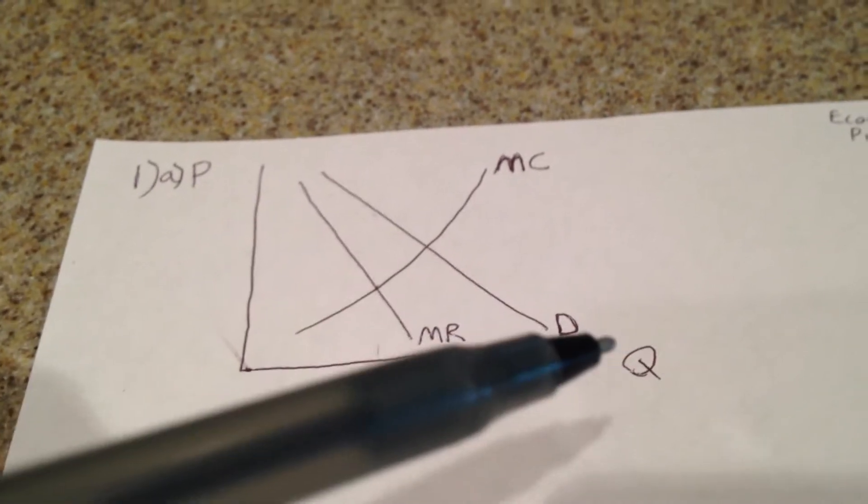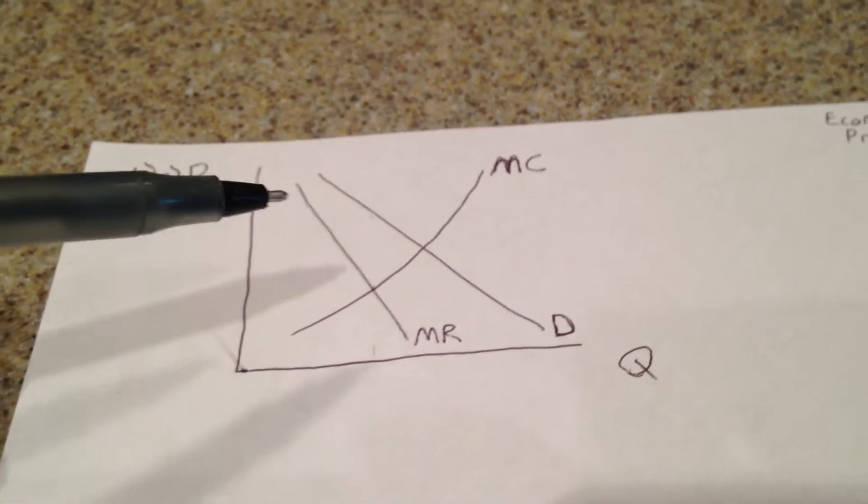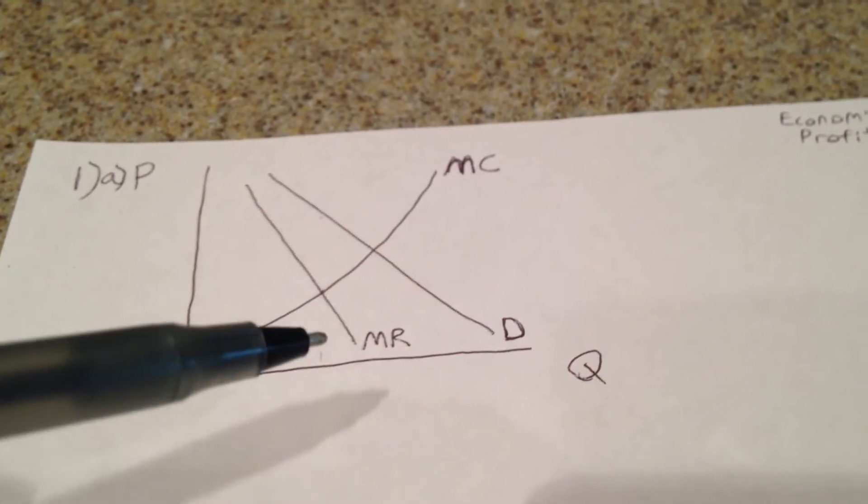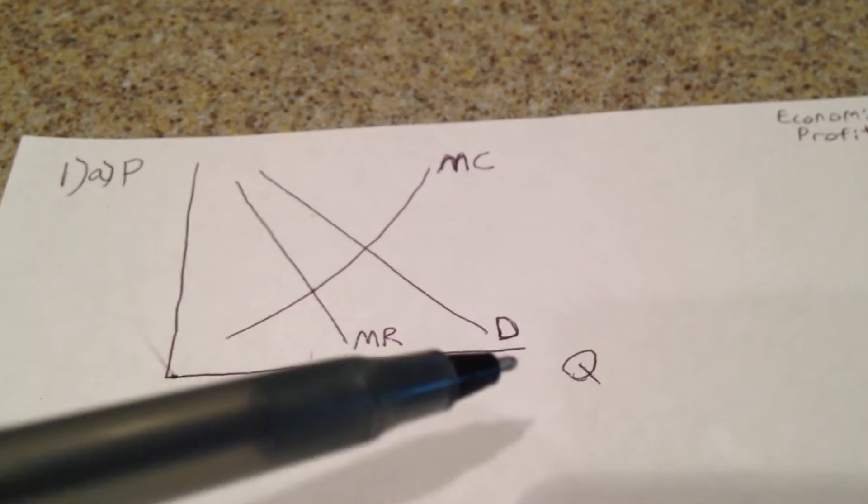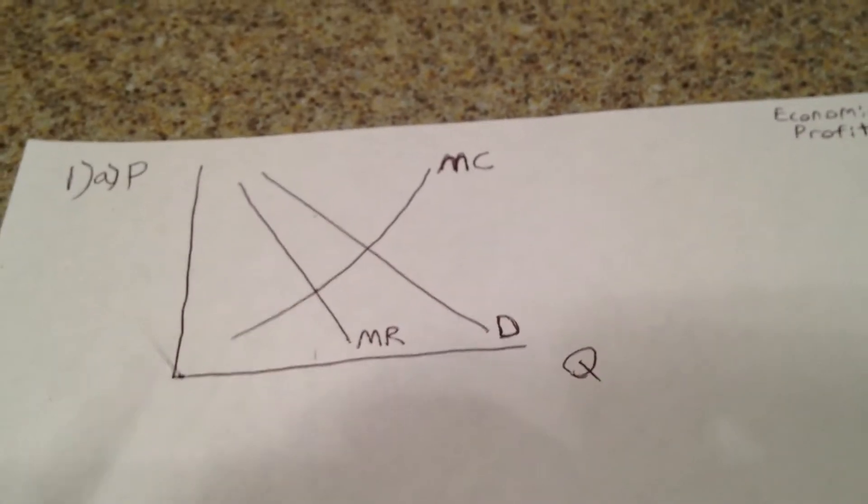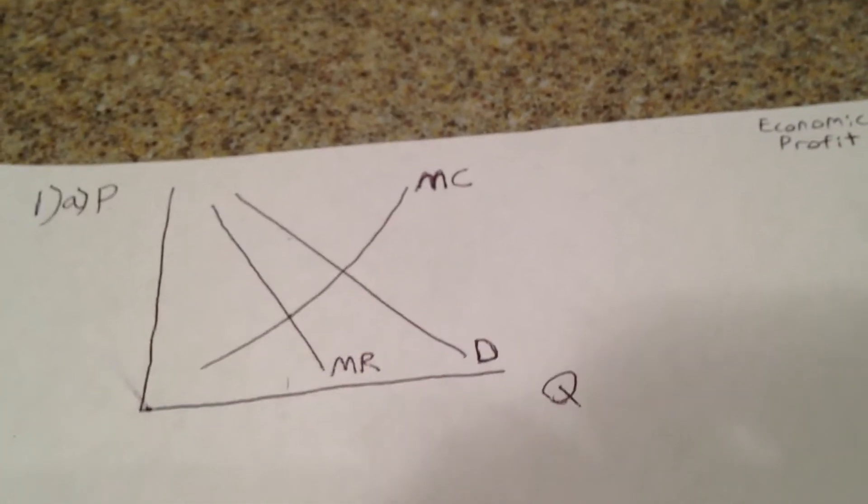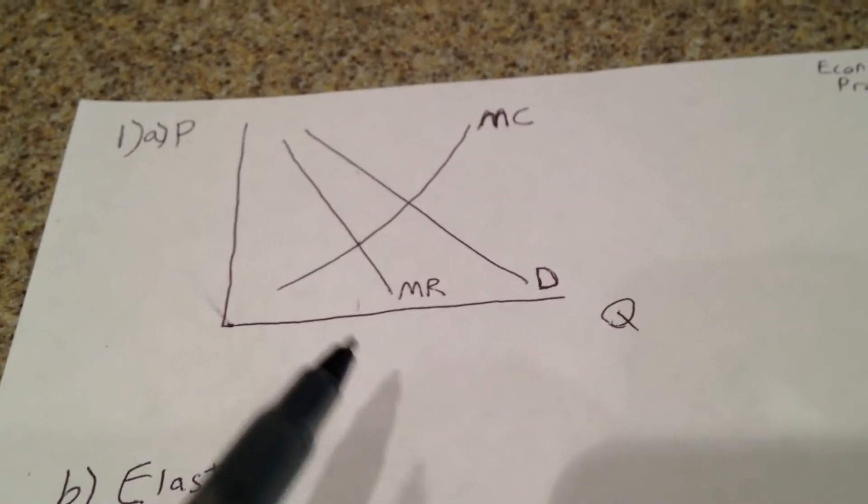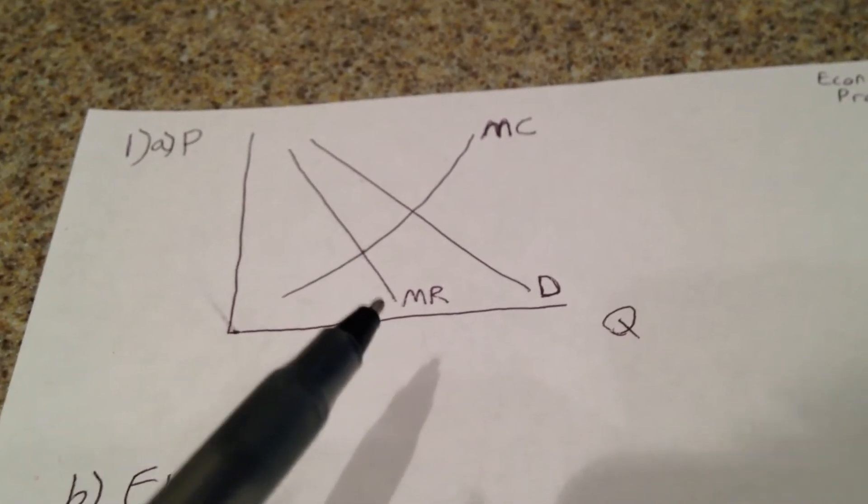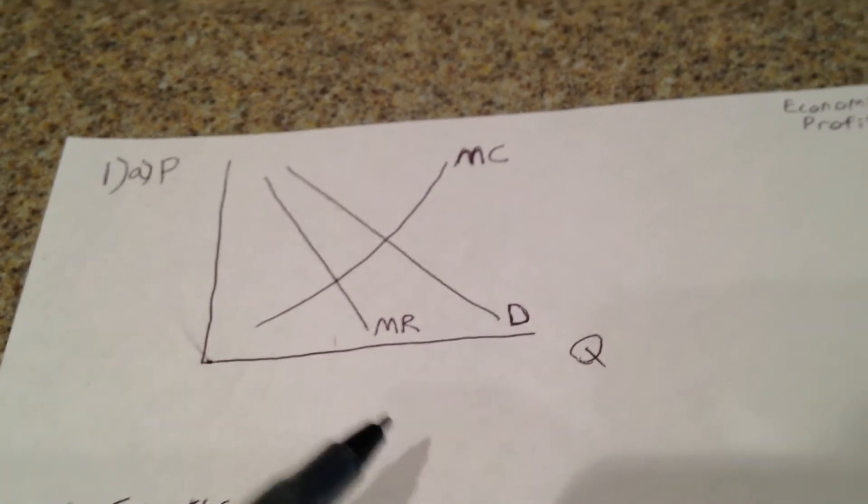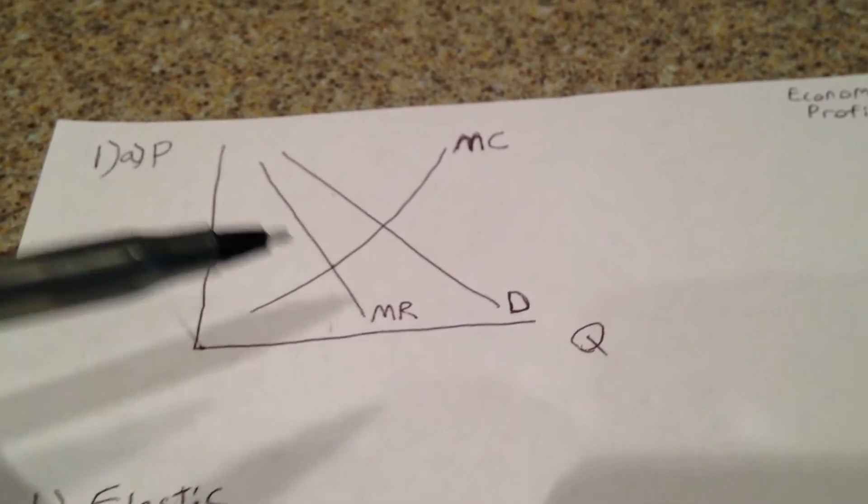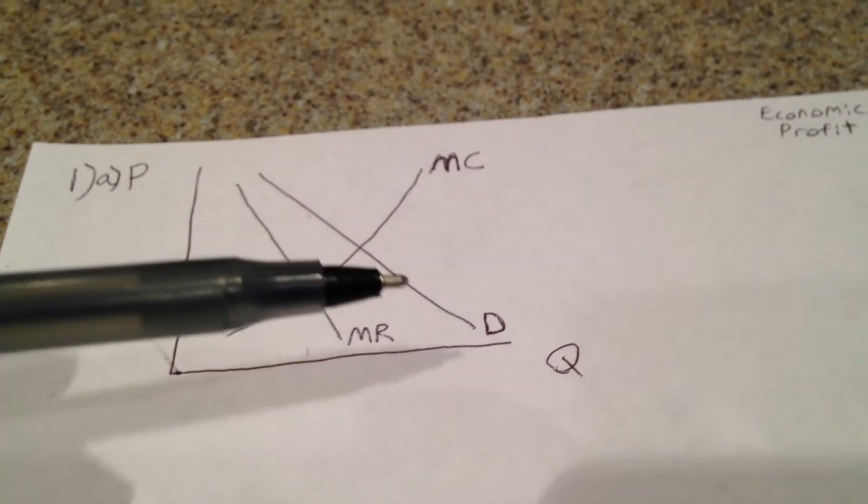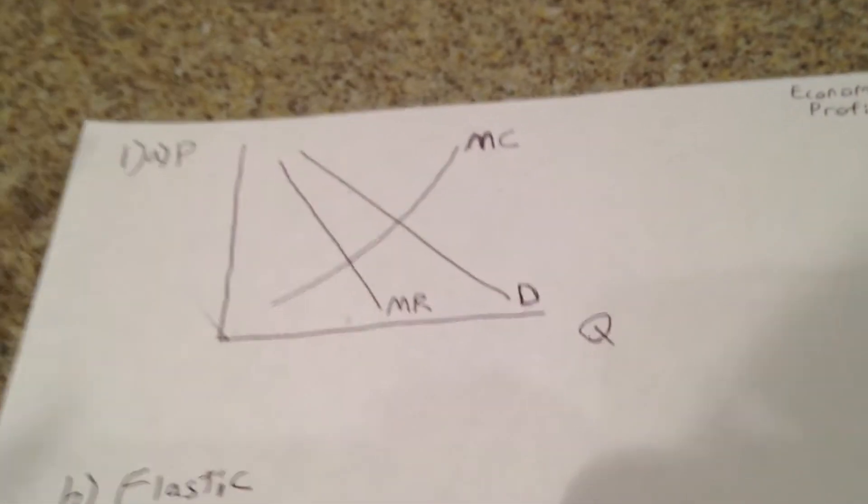We're going to have your downward-sloping demand curve and your marginal revenue curve that is downward-sloping but less than the demand curve. The marginal revenue curve is less than the demand curve in a monopolistically competitive firm because a change in the price required to get to the next sale or to increase output by one more is going to apply not just to that next sale but also all the sales before it. So your marginal revenue is going to decrease by a greater extent than the demand.